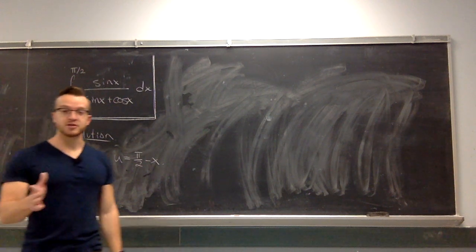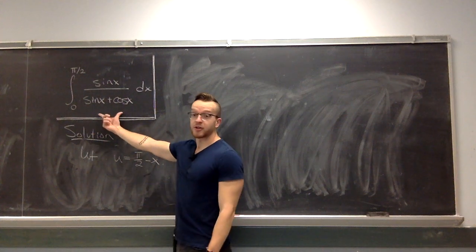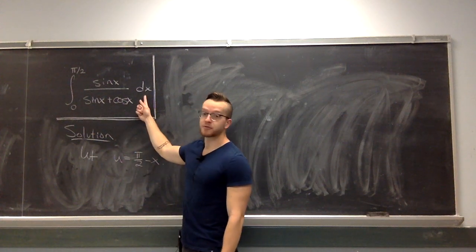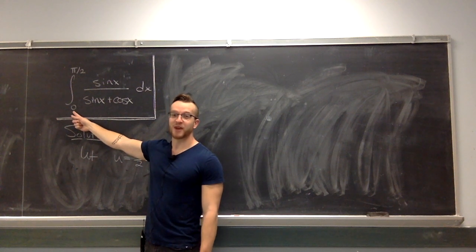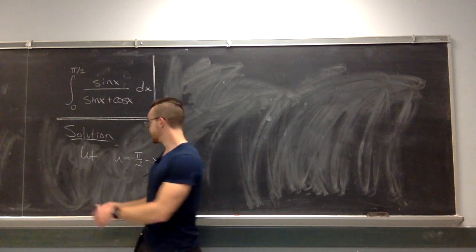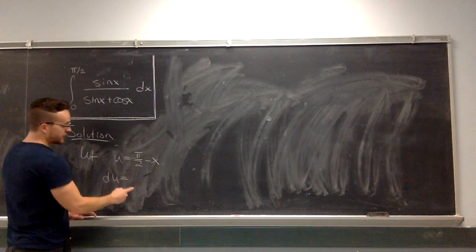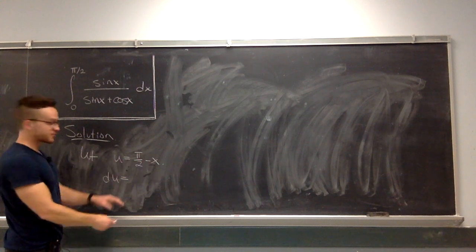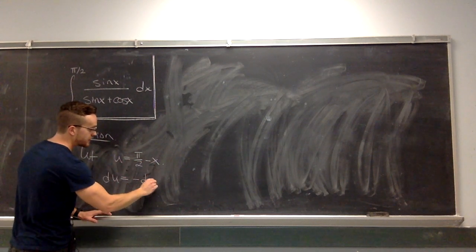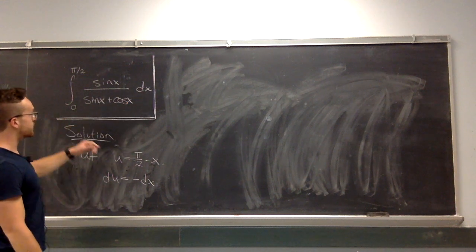As always, when you do a substitution, you need to change everything in the integral. That includes the thing you're integrating, it includes the differential, and whether you like it or not, it includes the bounds. We have to change everything. So du, take the derivative here, π/2 is constant, so we just get negative dx. That's how we can rewrite the differential.